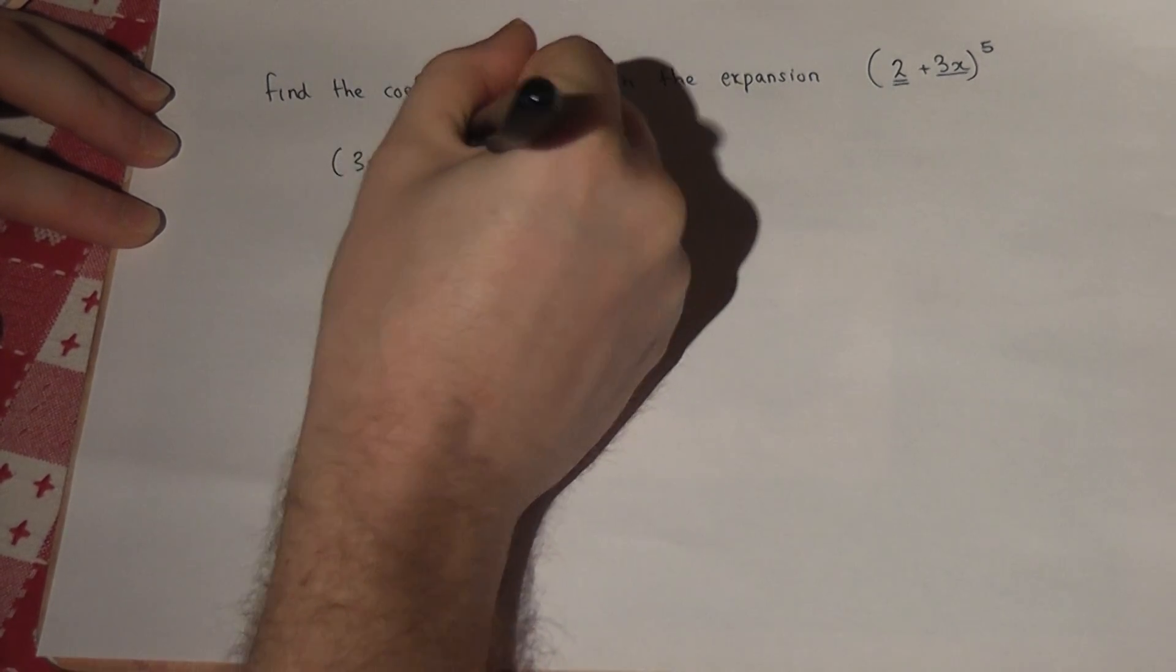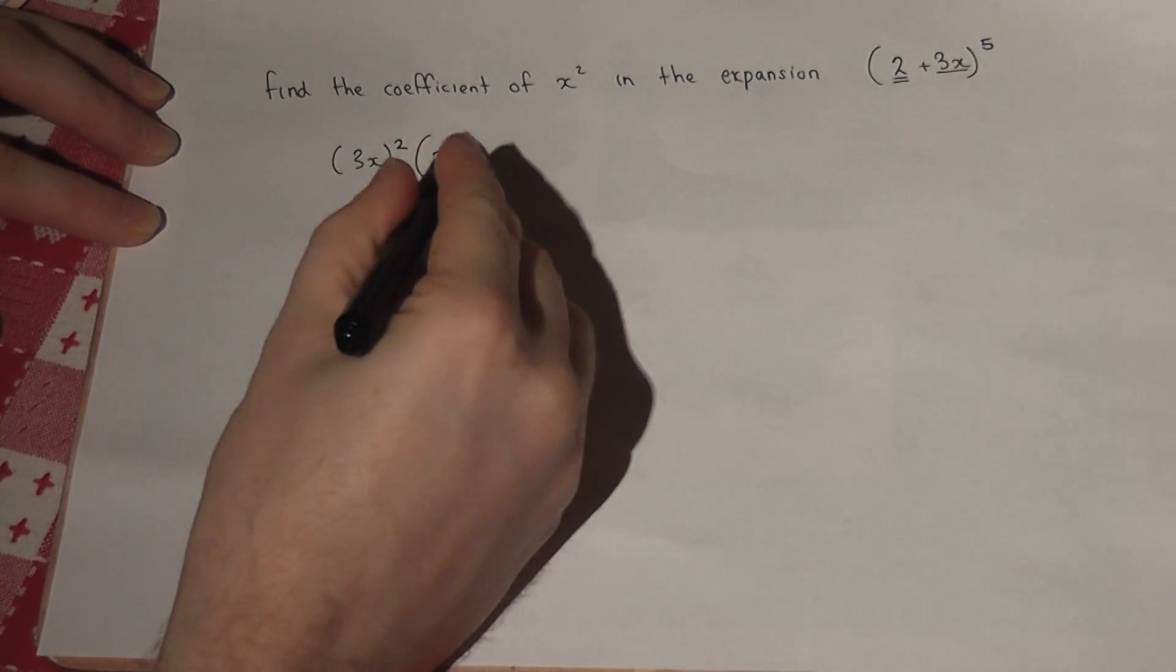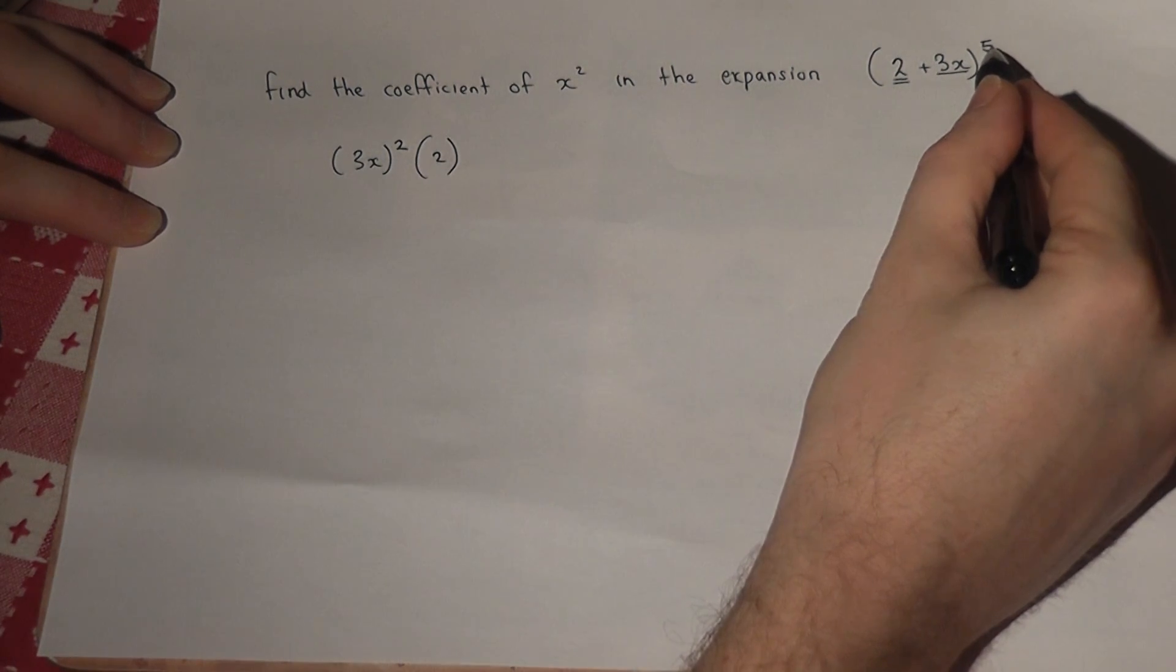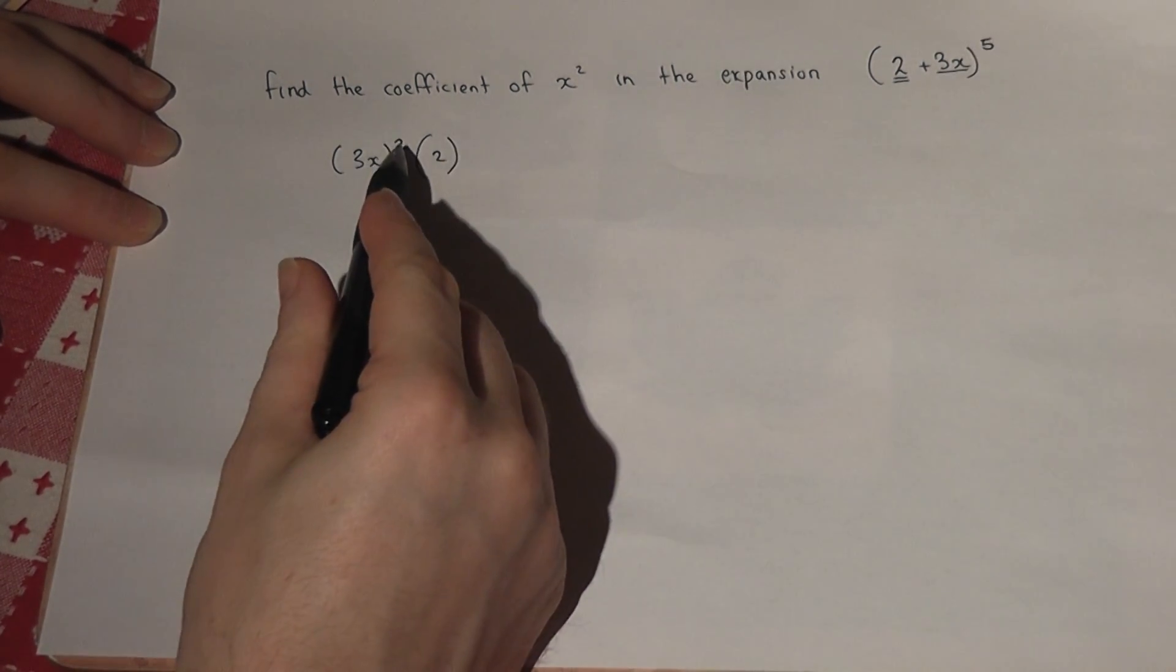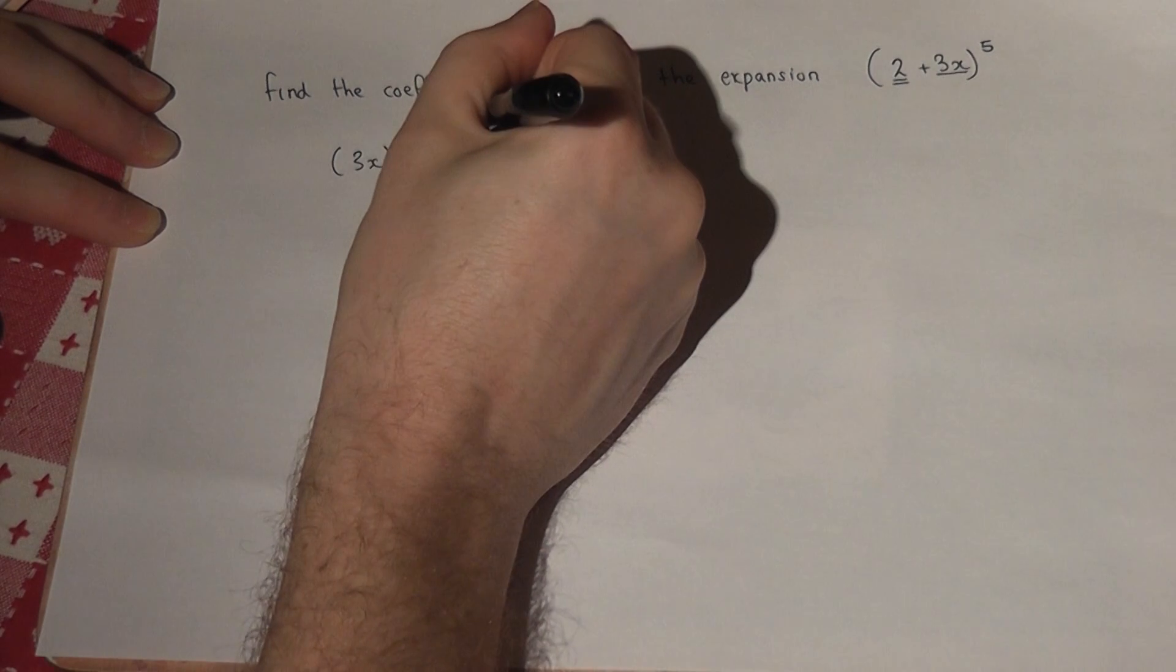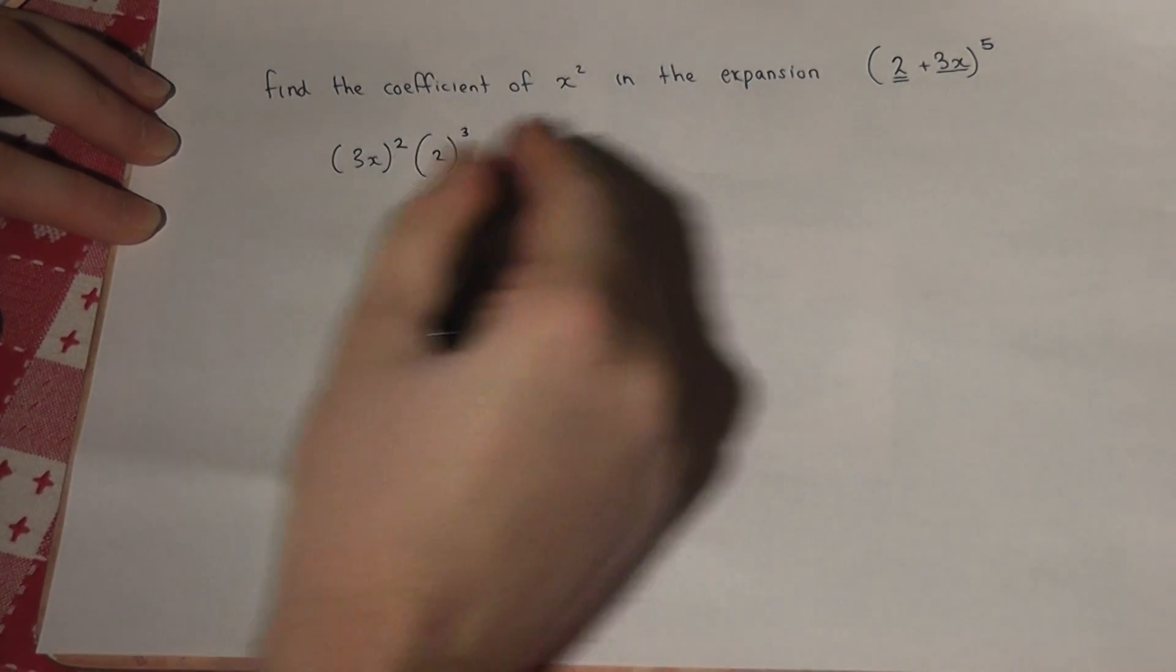I have the 2 in a bracket. The powers always add to make the overall power. So I want the x squared, so therefore the 2 must be cubed, because 2 plus 3 is 5.